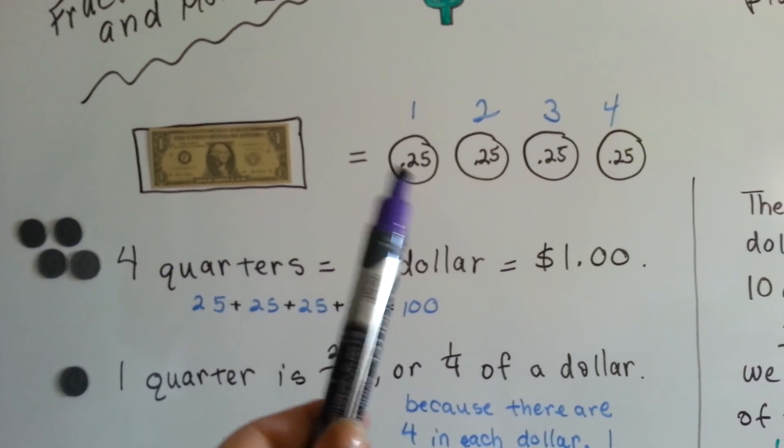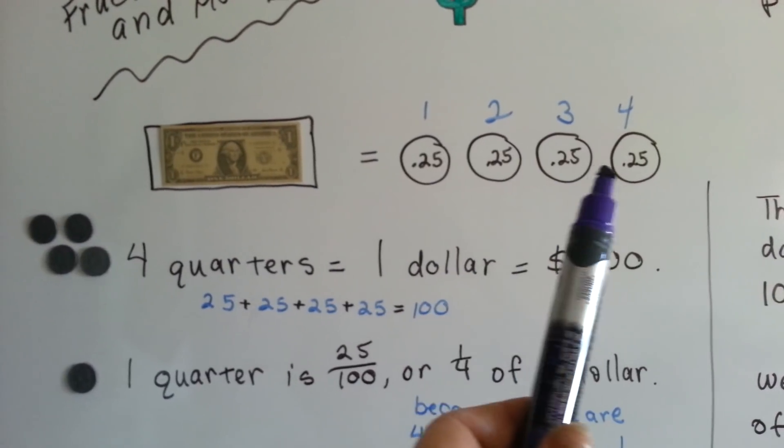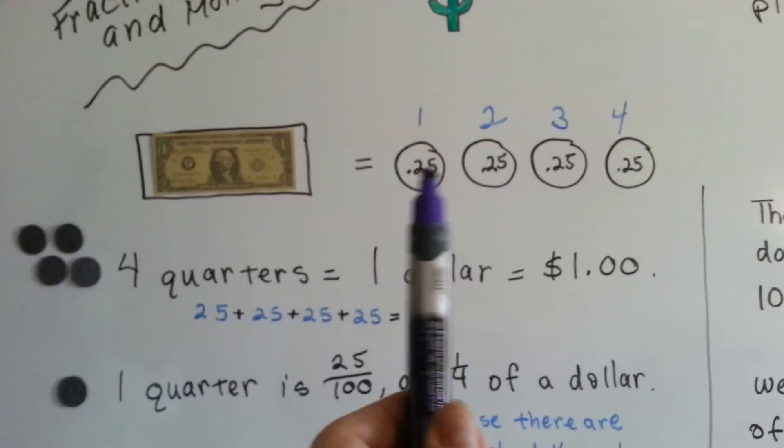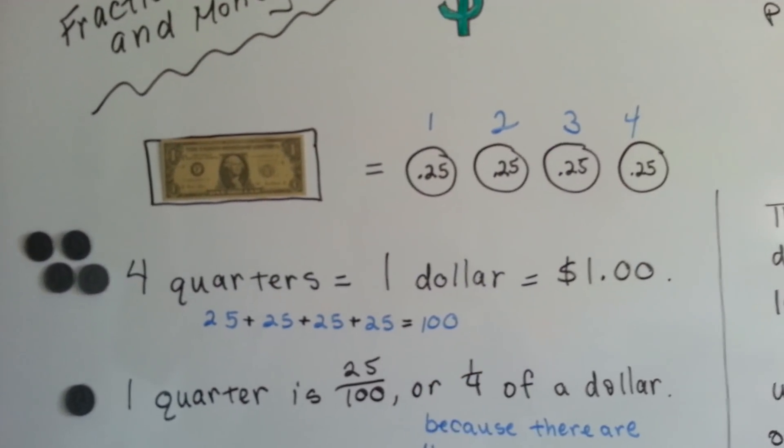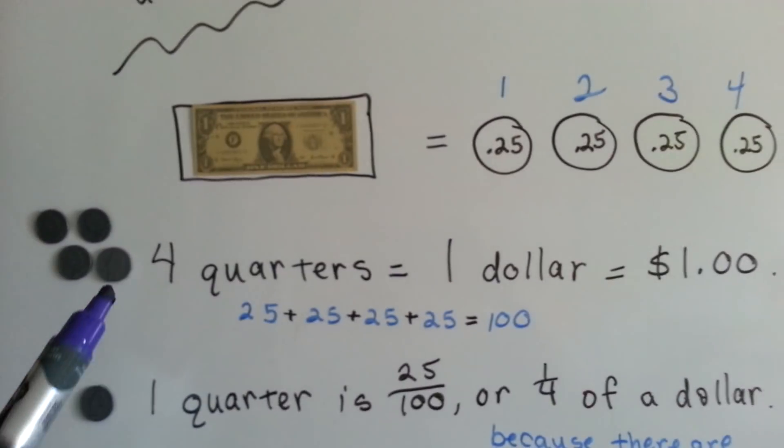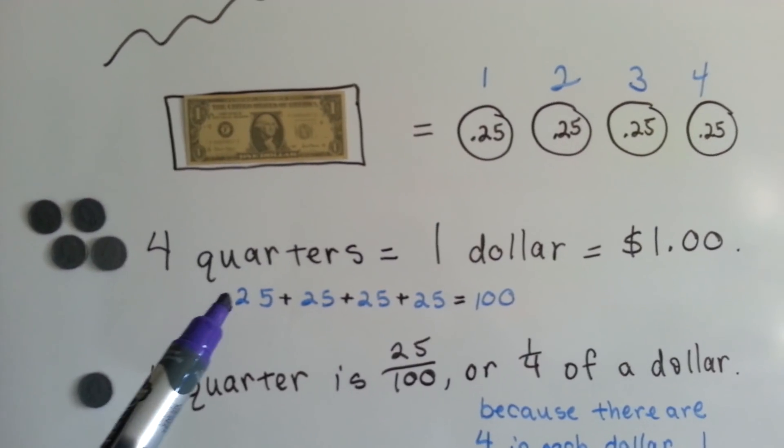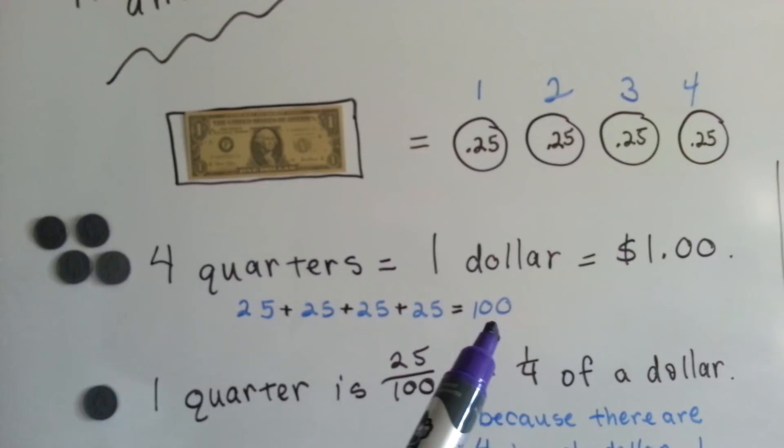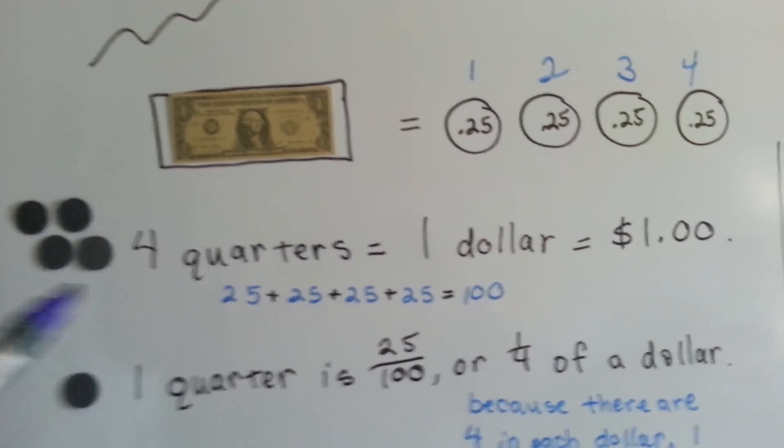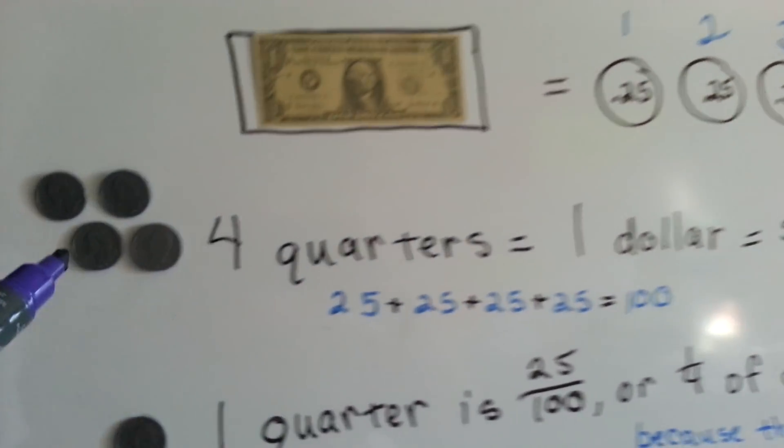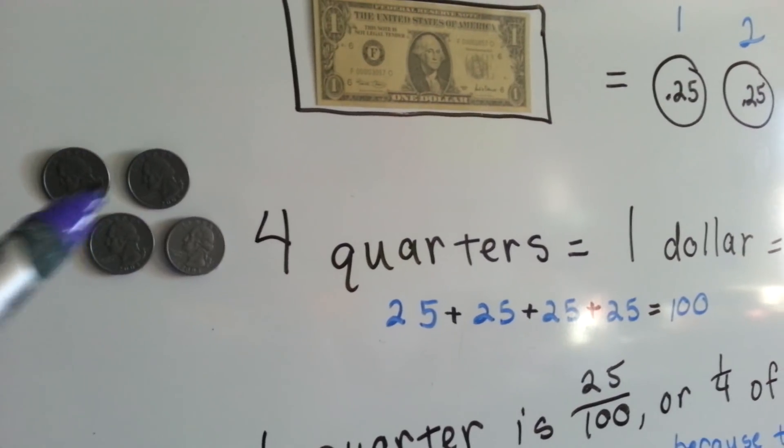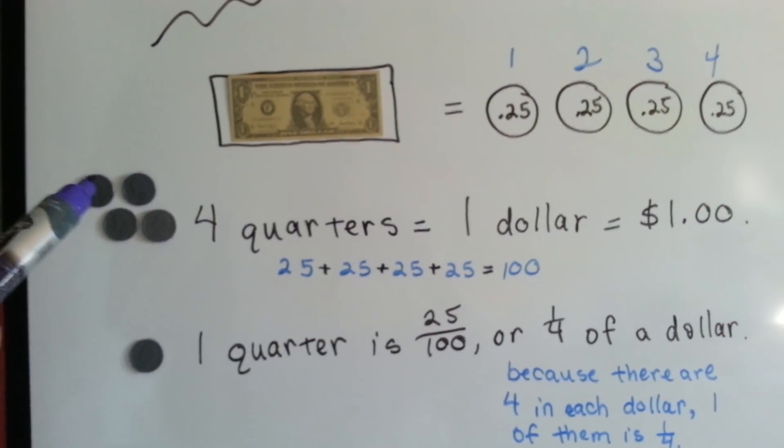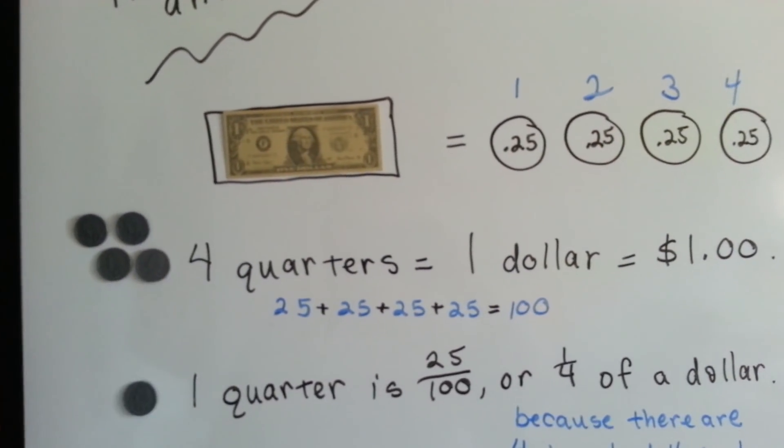Here we have a dollar bill, and these are 25 cent pieces. Four quarters make a dollar. It's like saying 25 cents and 25 cents and 25 cents and 25 cents makes 100. So these four guys right here make one dollar. We know when we have one of them, we have one-fourth of a dollar.